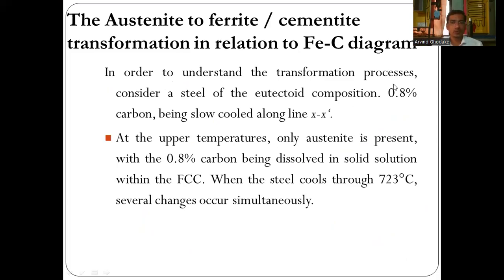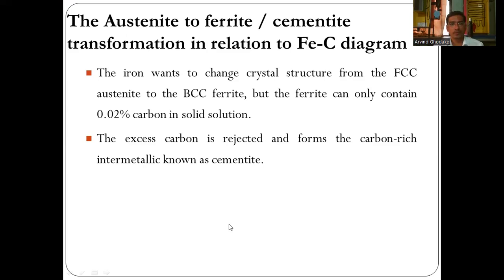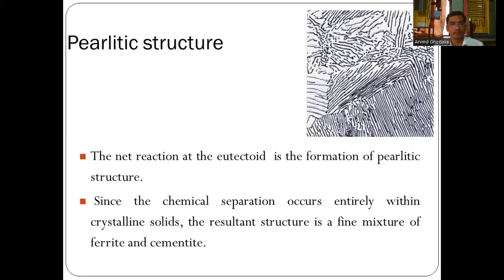To understand the transformation process, consider a steel of eutectoid composition — 0.8 percent carbon — slow-cooled along the X-line. At higher temperature, only austenite is present with 0.8 percent carbon dissolved in solid solution with FCC structure. When the steel cools through 727 degree Celsius, several changes occur simultaneously: iron wants to change crystal structure from FCC austenite to BCC ferrite, but ferrite can only contain 0.02 percent carbon in solid solution. The excess carbon is rejected and forms carbon-rich intermetallic plates called cementite. The net reaction at the eutectoid is the formation of the pearlite structure — a fine mixture of ferrite and cementite formed entirely within the crystalline solid.